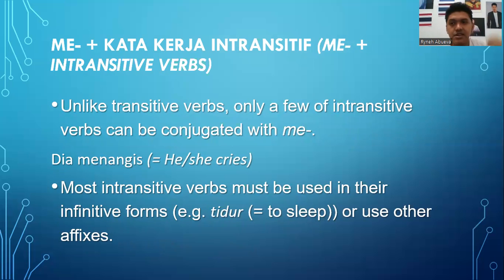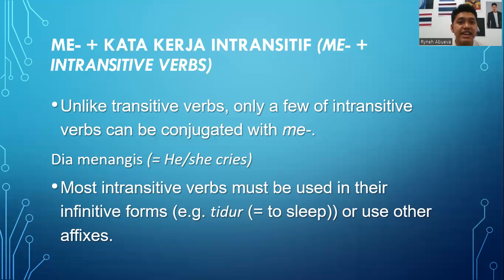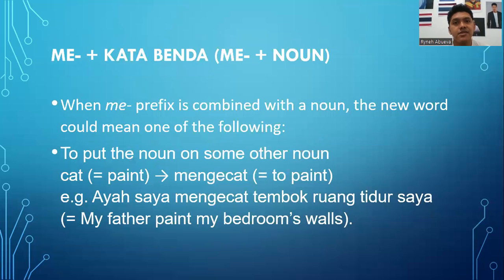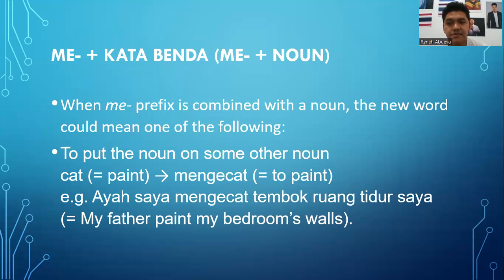Now me- plus intransitive verbs: unlike transitive verbs, only a few intransitive verbs can be conjugated with me-. One example is dia menangis, meaning he or she cries. Most intransitive verbs are used in their infinitive forms — for example, tidur means to sleep.